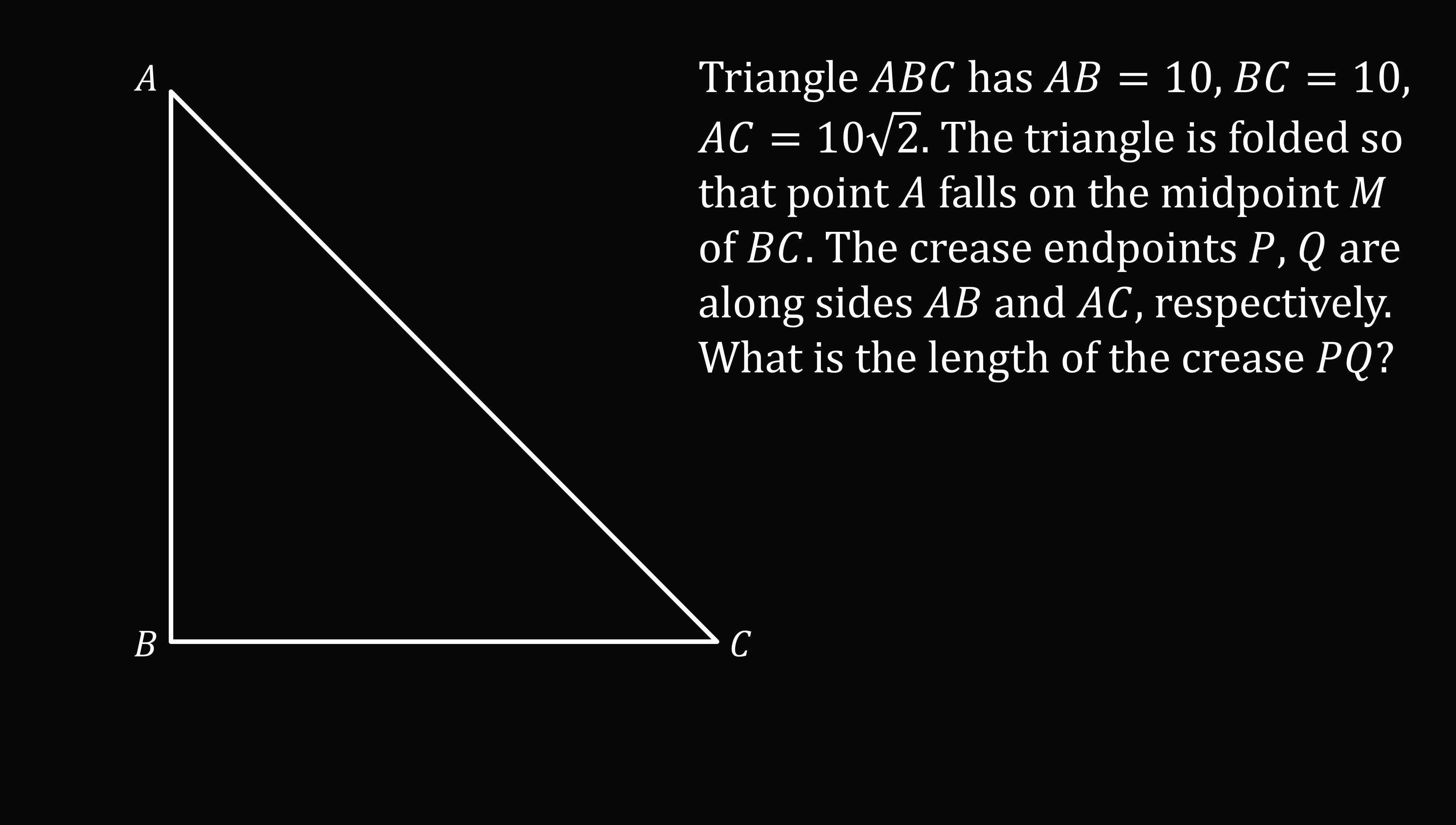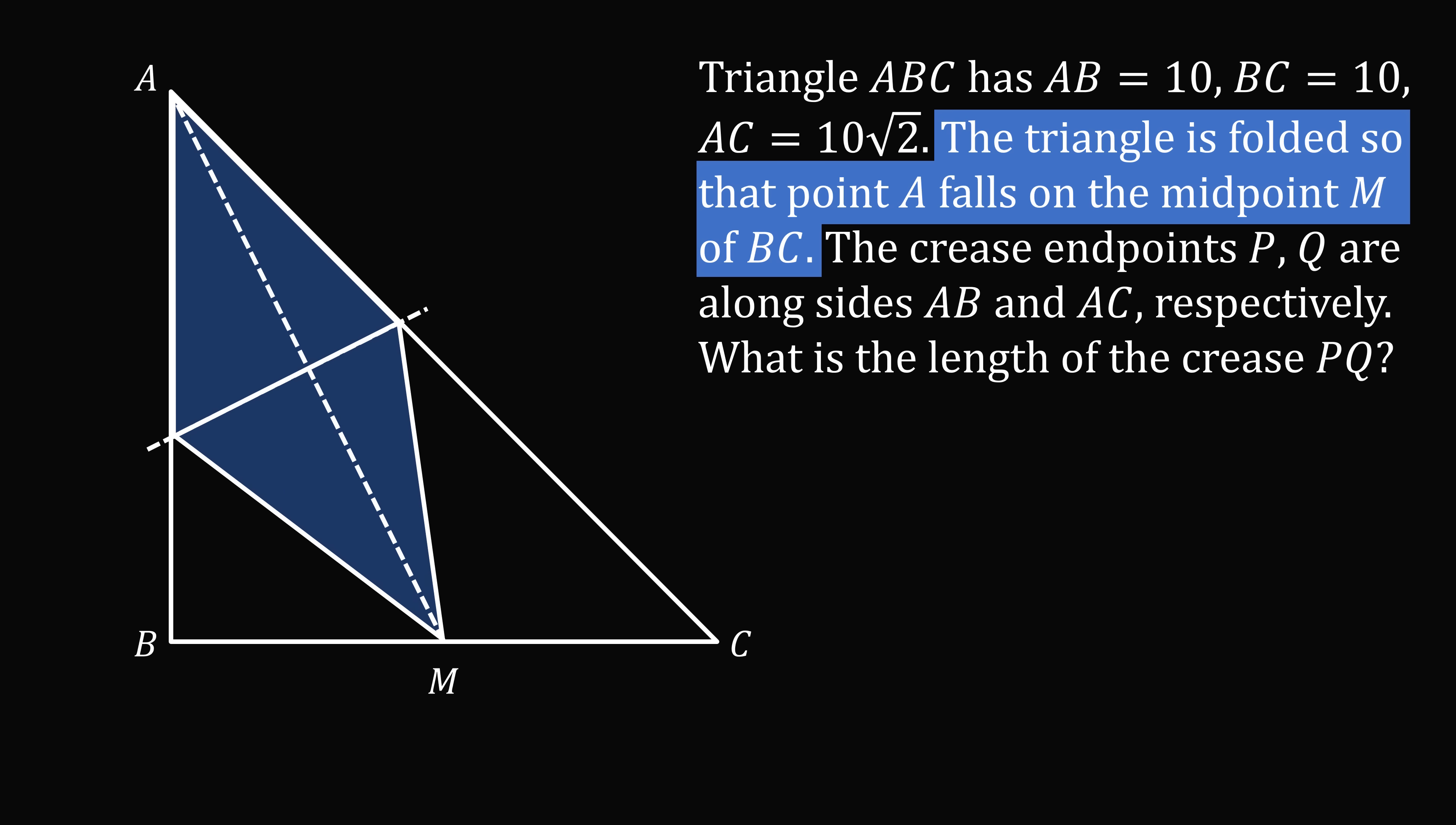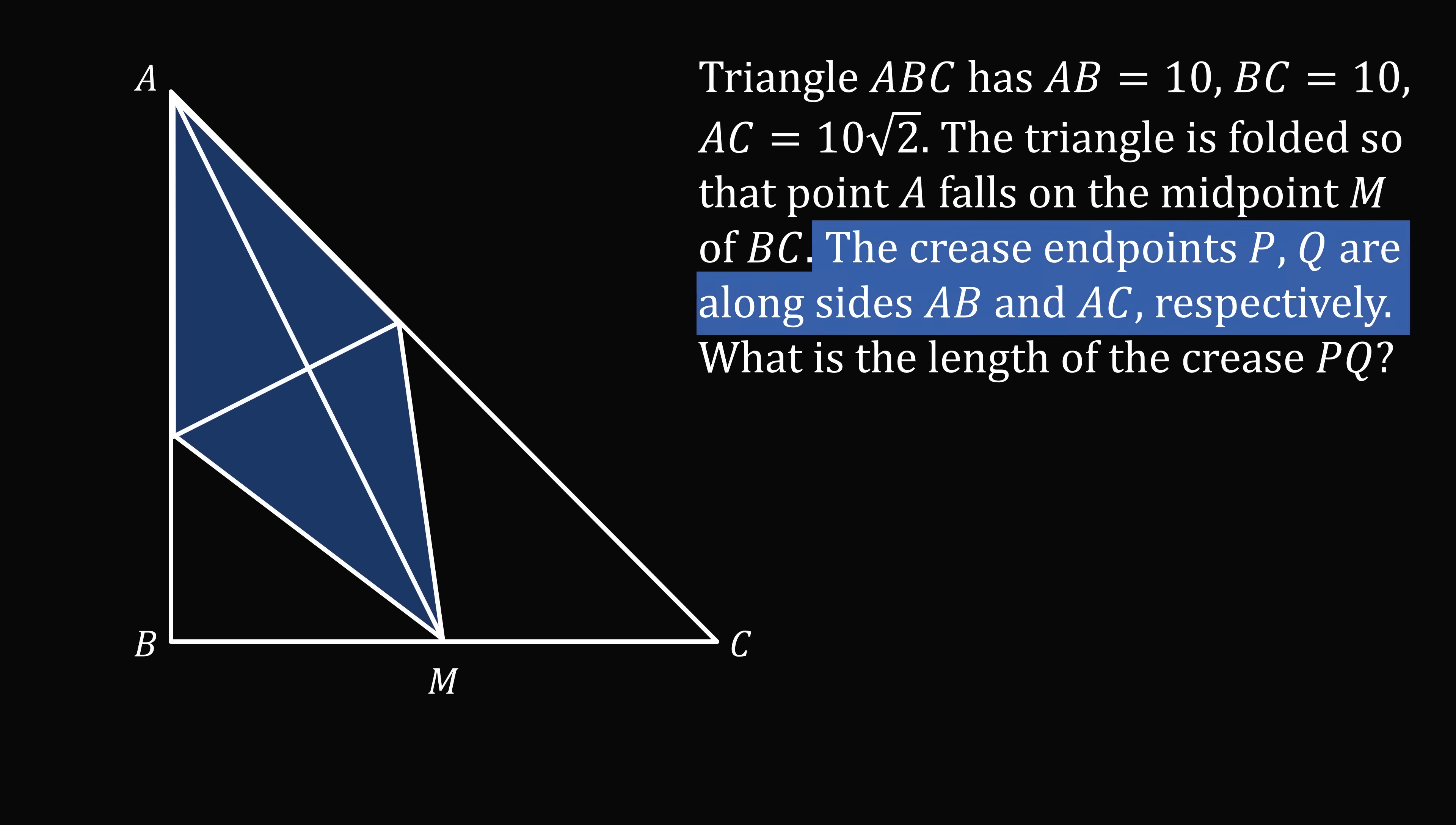So we will sketch a right triangle ABC with hypotenuse AC. The triangle is folded so that point A falls on the midpoint M of BC. So we will imagine making a crease here so that this triangle gets folded over the crease, and it results so that A ends up at point M, which is the midpoint of BC. So that upper triangle gets folded down over the crease. The crease has endpoints P and Q alongside AB and AC, so the crease will be P and Q. We now need to figure out the length of the crease PQ.